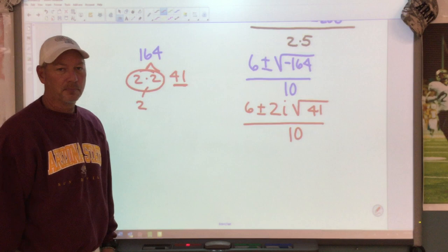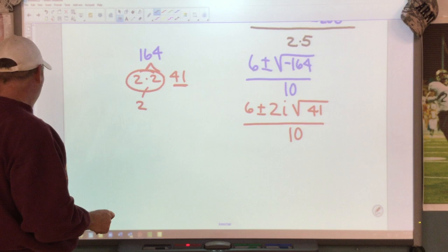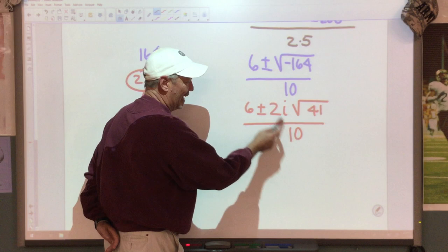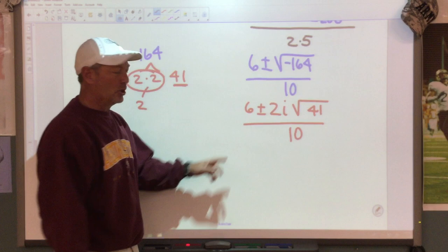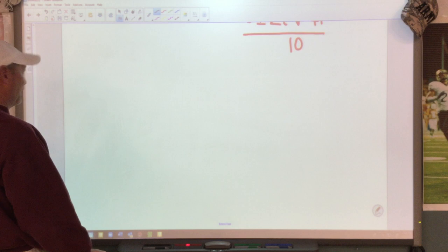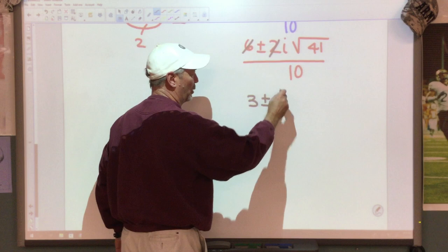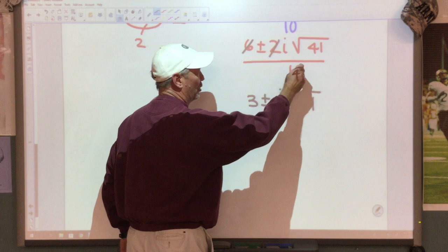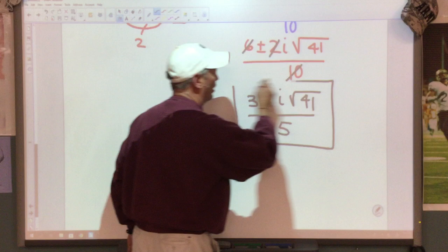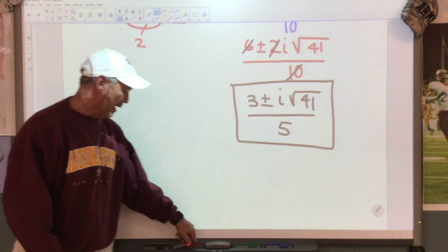So when I simplify, I get 6 plus or minus 2i square root of 41 over 10. Can we reduce? Looking at 6, 2, and 10 — the number 2 goes into all three of those. So we divide by 2: we get 3 plus or minus — the 2 cancels leaving I — square root of 41, over 5. There is my final answer: 3 plus or minus i square root of 41 over 5.